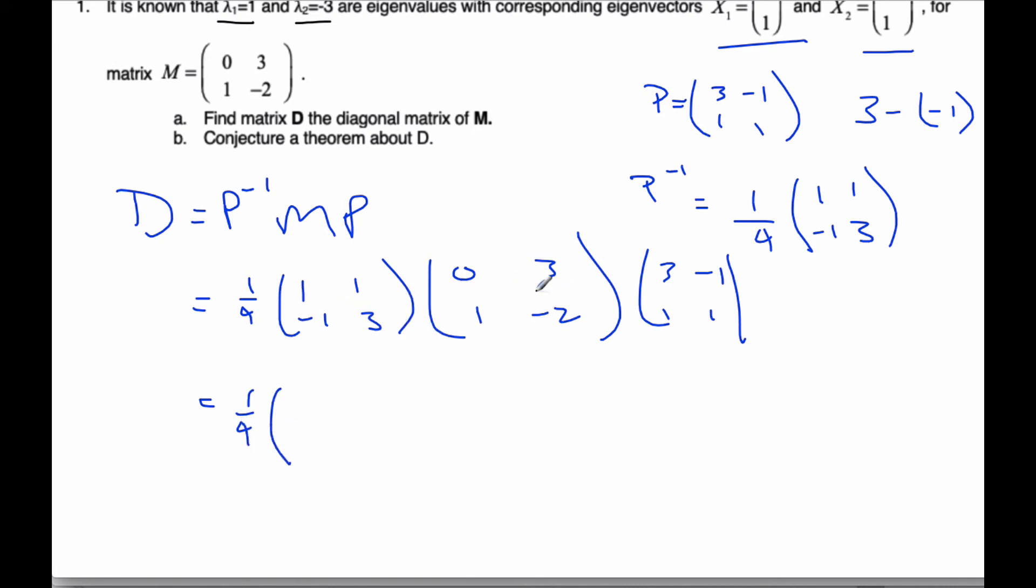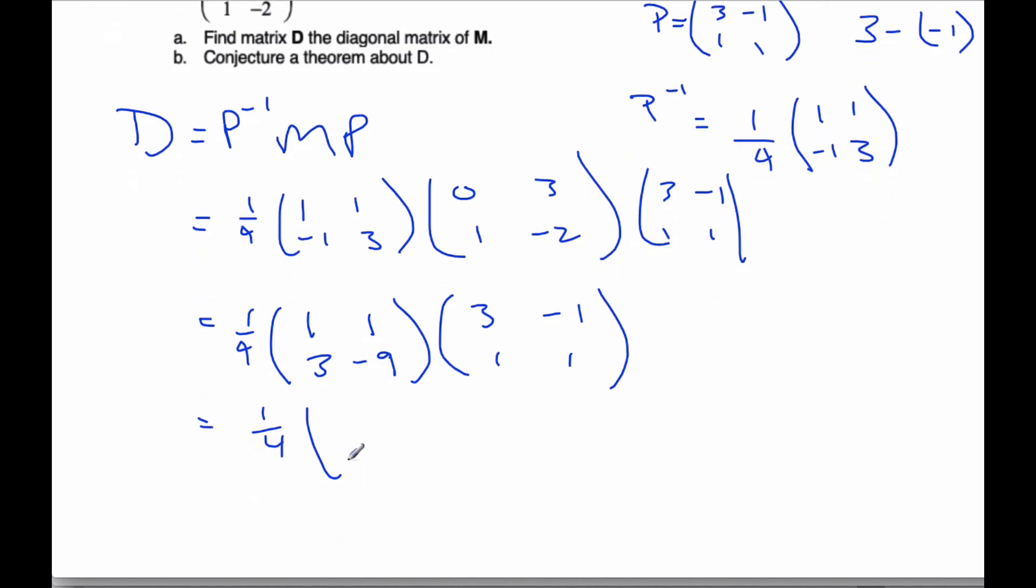the inverse times M. So I've got 1 times 0, plus 1 times 1, gives me 1. 1 and 3, that gives me 1 also. Negative 1 times 0, plus 3. And negative 3, plus a negative 6, gives me negative 9. And hopefully by this time, you are quite good at multiplying matrices by hand. And it's a skill that is quite essential to matrices.